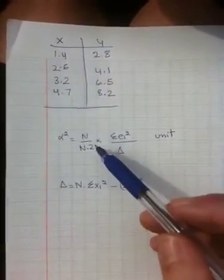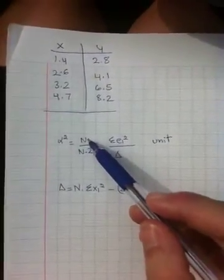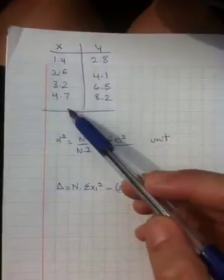Now let me explain each term in the equation for the error. n is the number of points. In this case, you have four points.